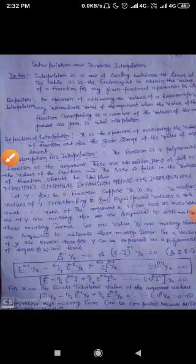For value x equals a, the first tabulated value of the argument, we have e to the n times y0 minus nC1 times e to the n minus 1 times y0 plus nC2 times e to the n minus 2 times y0 plus dot dot dot minus 1 to the power n times y0 equals 0. From above equation, missing terms can be computed because all other terms are known. Numerical example in this regard.